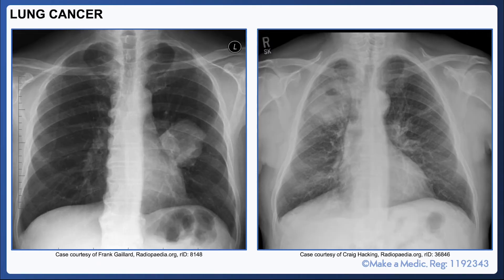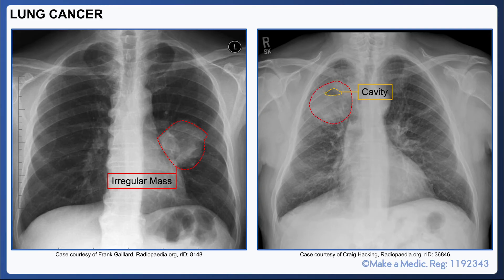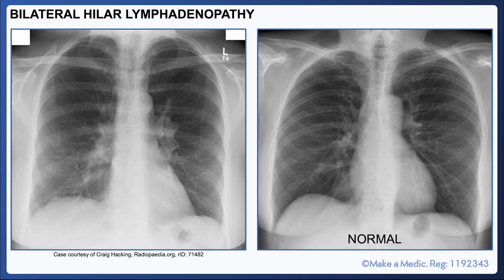Small lung masses may not be particularly easy to visualize on a chest X-ray, especially if obscured by other structures like the heart. However, abnormal masses are important to note as the patient is likely to require further investigations. In the example on the left, a large irregular mass is visible near the left hilum. On the right, you can see a large mass within the upper lobe of the right lung containing a small cavity — a feature most commonly associated with squamous cell lung cancer.